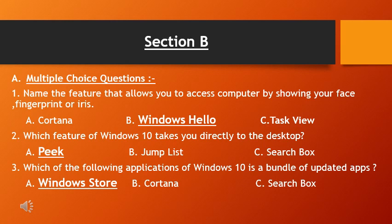Next: which feature of Windows 10 takes you directly to the desktop? Option A is Peek, Option B is Jump List, and Option C is Search Box — the answer is Peek. By using the Peek feature, you jump directly to the Windows 10 desktop. Next: which application of Windows 10 is a bundle of updated apps? Options are Windows Store, Cortana, and Search Box — the answer is Windows Store.